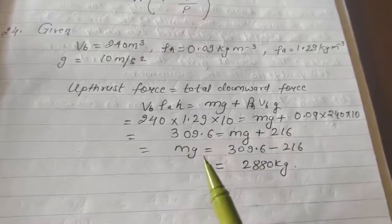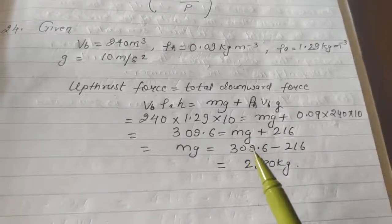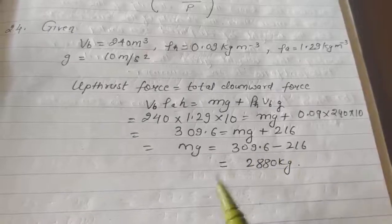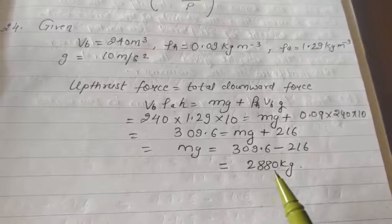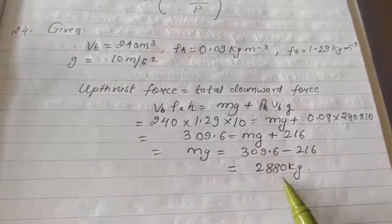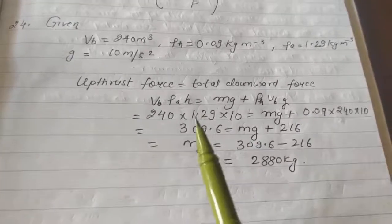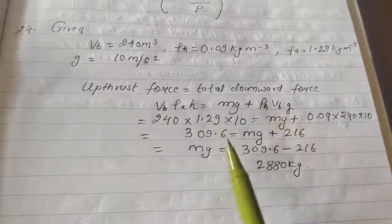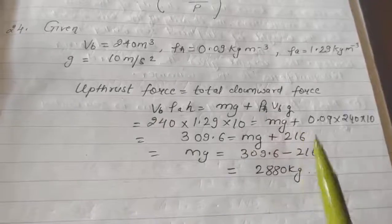And mg is equal to 309.6 minus 216 is equal to 2880 kg. So this is your answer. You simply have to write the values in this formula and solve it, you will get the answer.